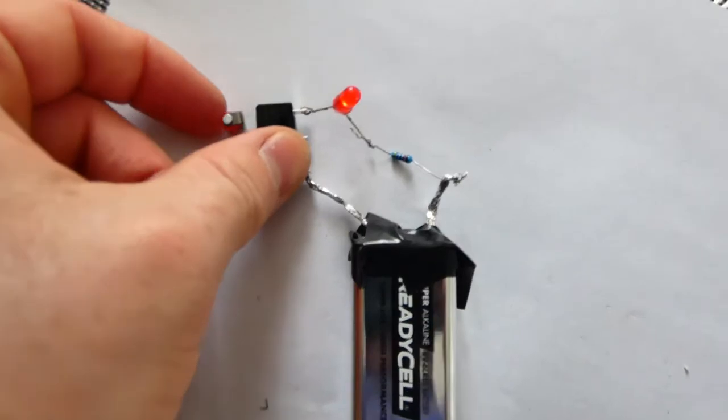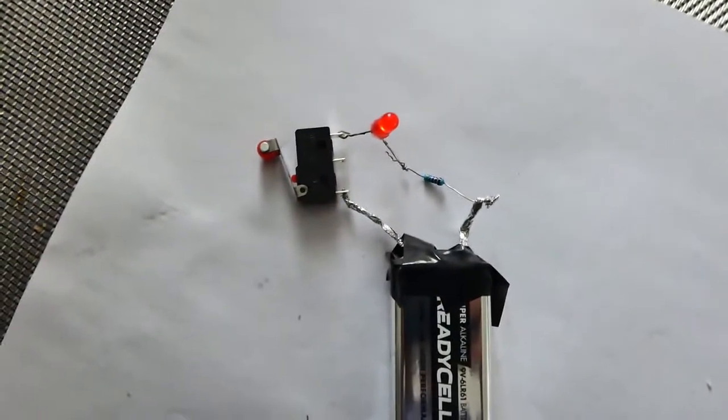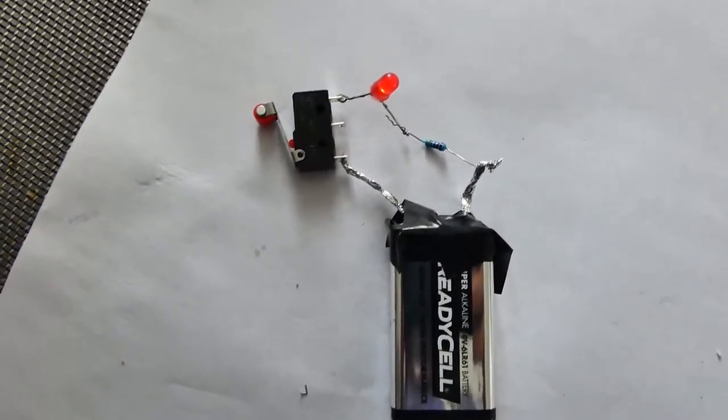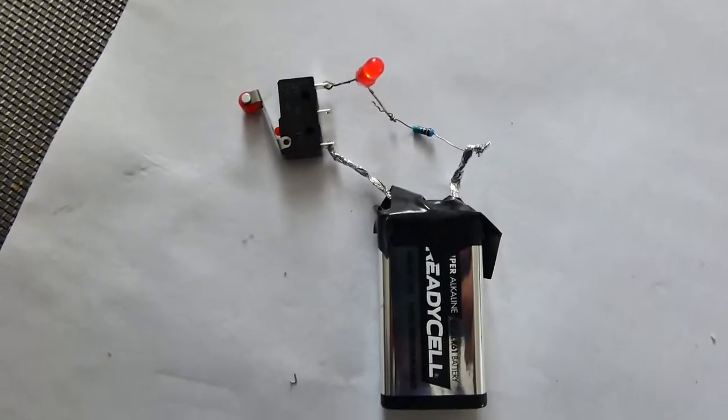And if you want to add your limit switch, cheap. You can get these limit switches for 50 pence off eBay. And you can get the LEDs and resistors, you can get like 50 of each for 3 or 4 pounds.